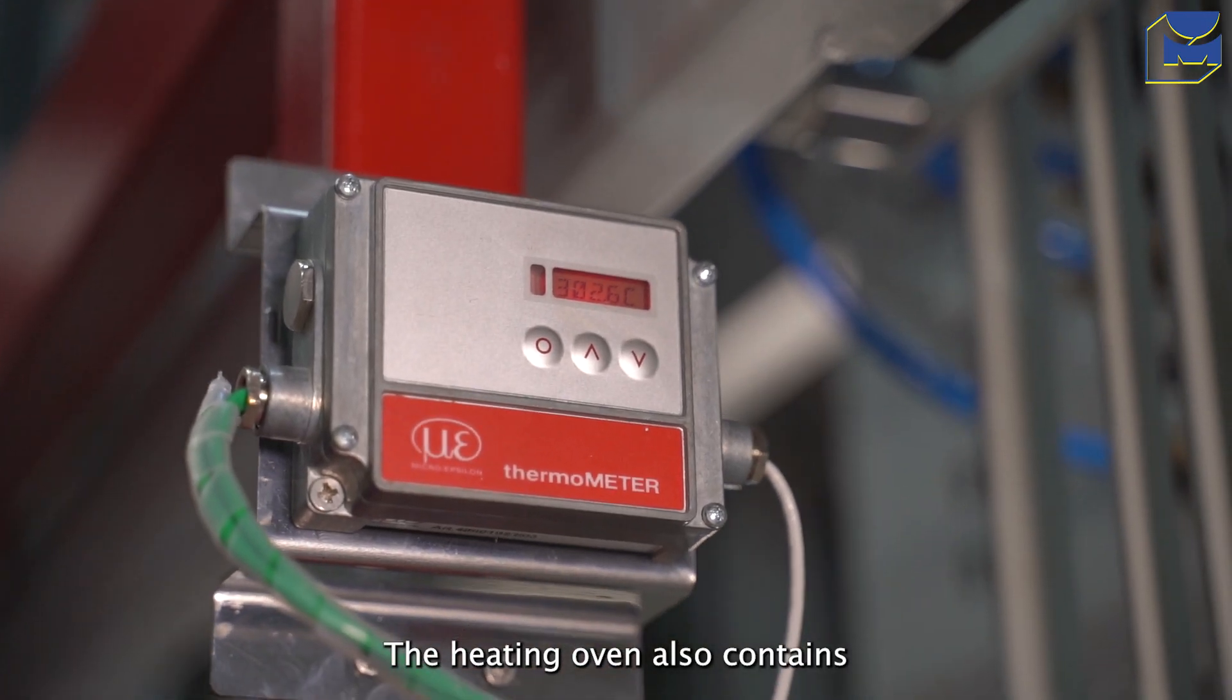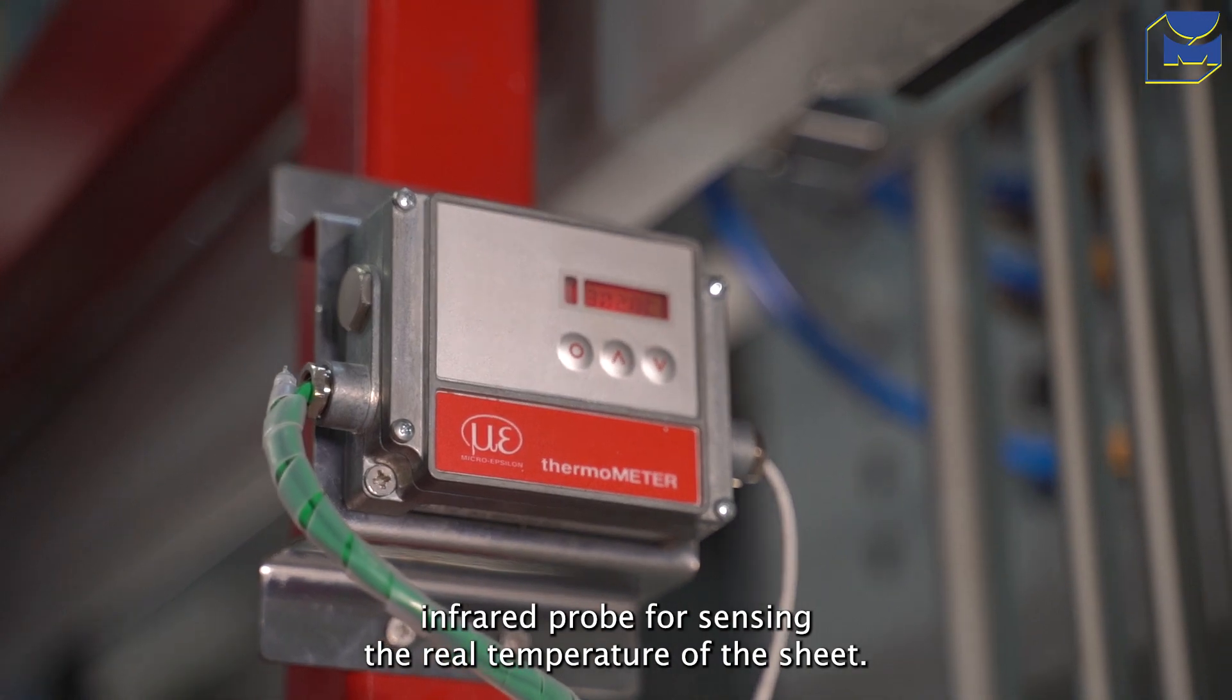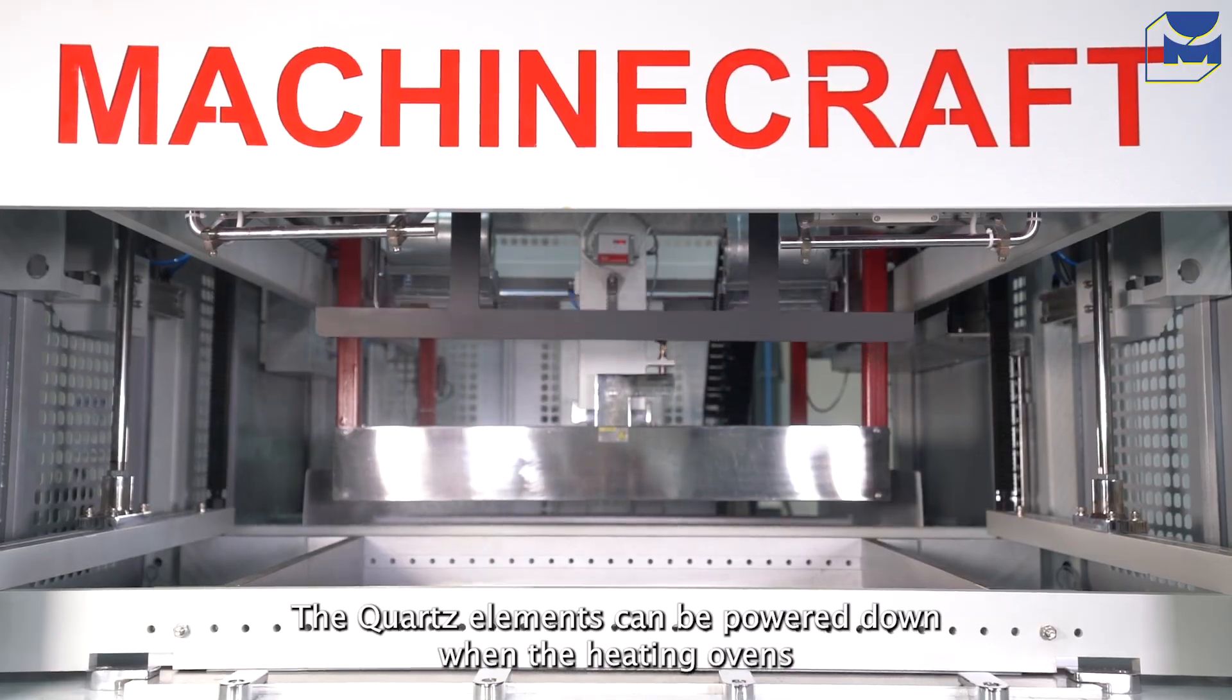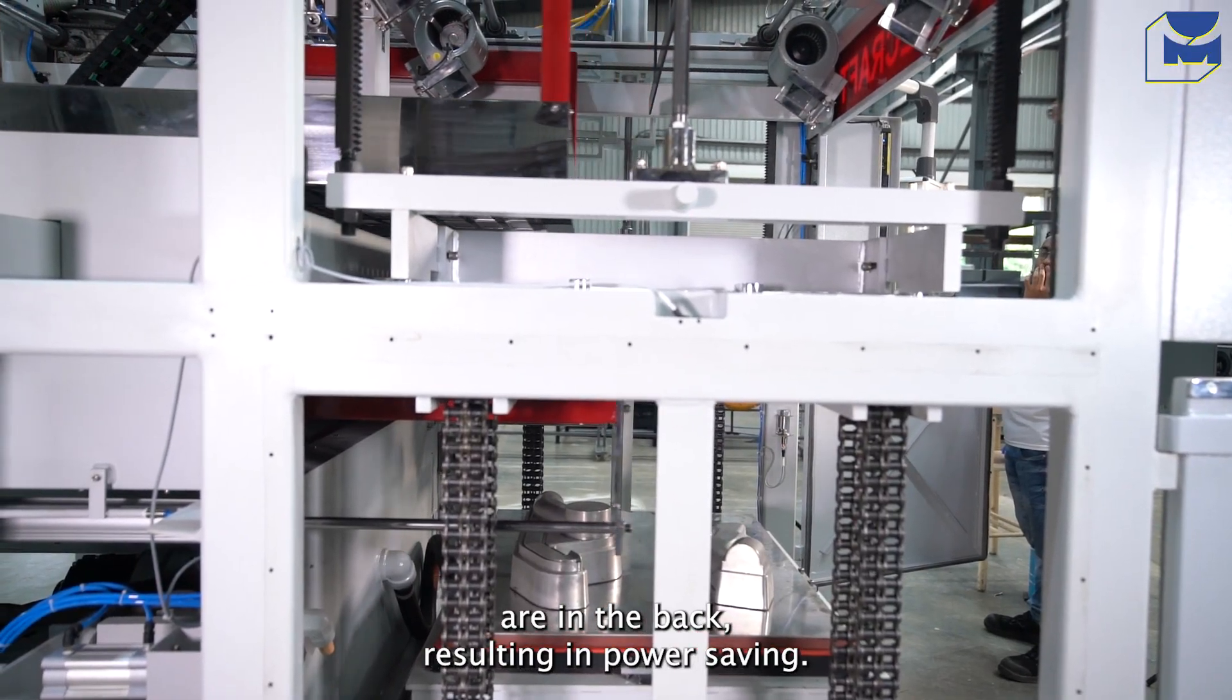The heating oven also contains infrared probes for sensing the real temperature of the sheet. The quartz elements can be powered down when the heating ovens are in the back, resulting in power saving.